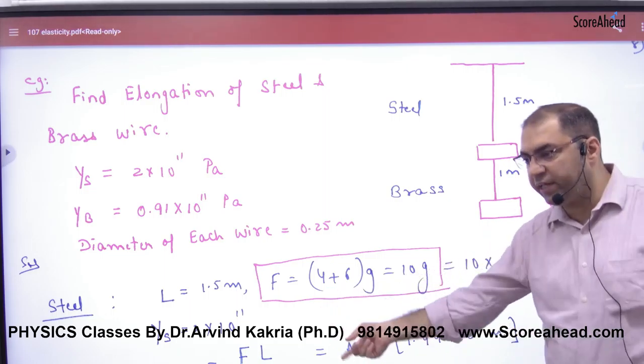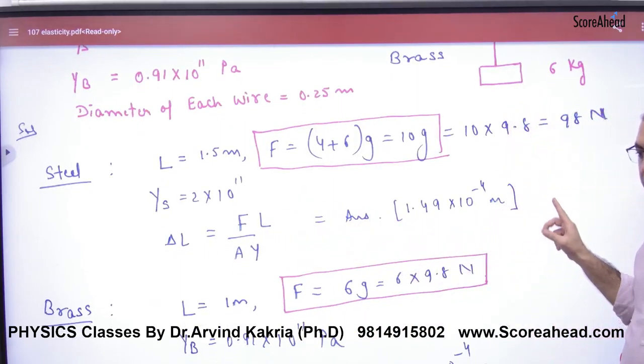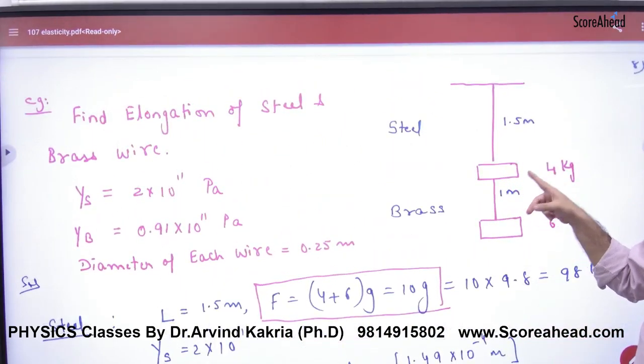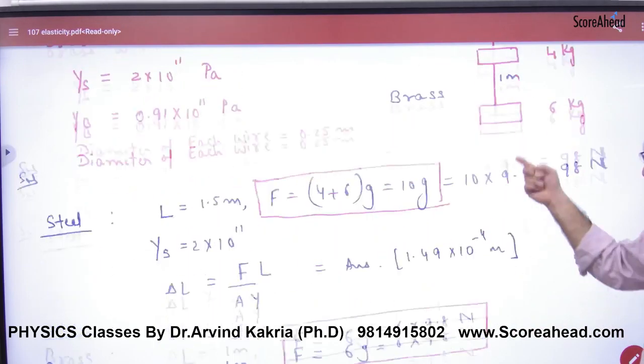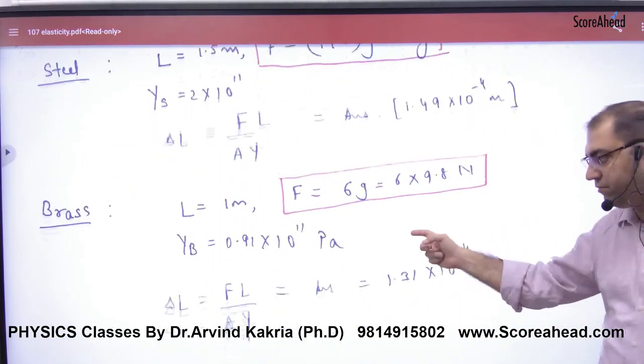So Young's modulus, you know. Young's modulus times delta L will be given. To answer, but when you put brass, length is 1. What will force? 6 kg. Delta L will be given to. So point clear here.